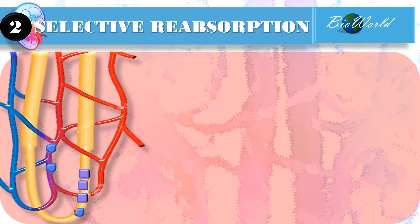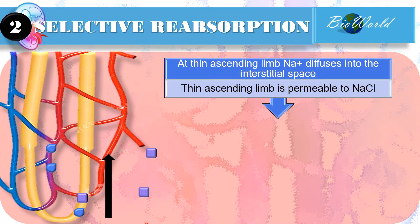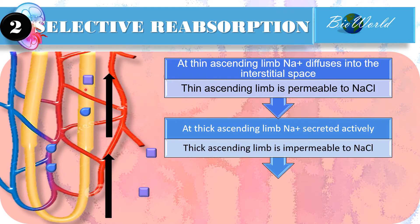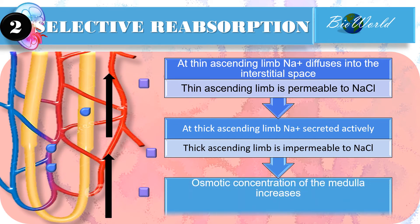The filtrate will continue to flow up the thin ascending limb, and here the sodium ions will diffuse into the interstitial space — that is, the tissues of the medulla. This is possible because the thin ascending limb is permeable to sodium chloride but impermeable to water, so whatever water is still present in the filtrate will remain in the loop of Henle. The filtrate then continues to flow up the thick ascending limb, which is impermeable to both water and salt. However, the thick ascending limb can actively pump sodium into the interstitial space. The accumulation of sodium ions by the ascending limbs is what makes the medulla hyperosmotic.